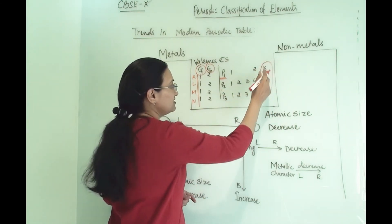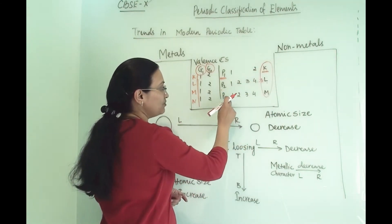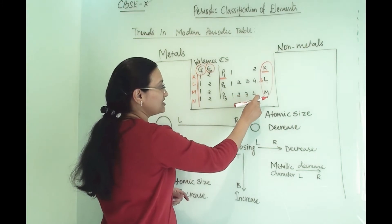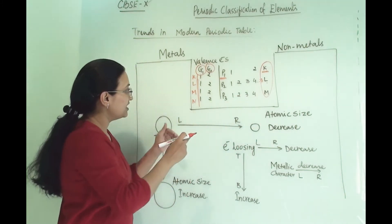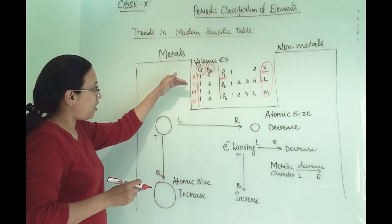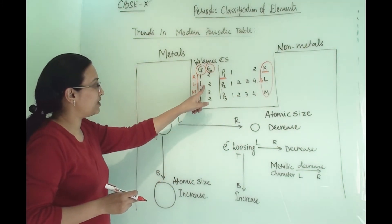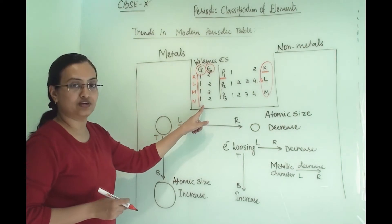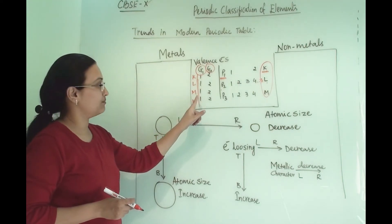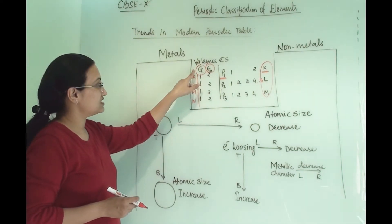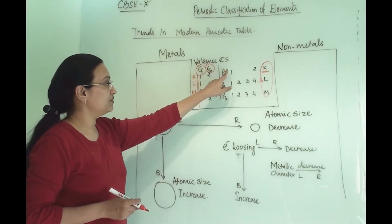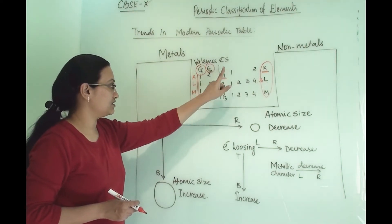So this you need to remember: across the period, the same shell gets one electron added at a time. Across the group, orbitals are being added but the valence electron will remain the same.